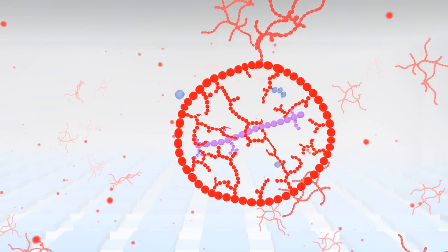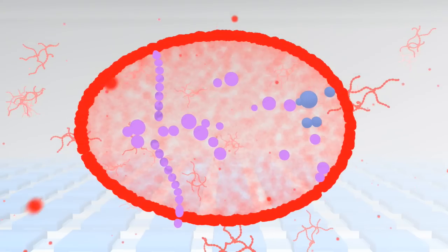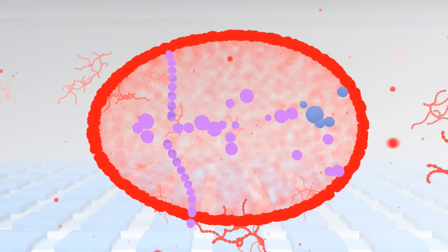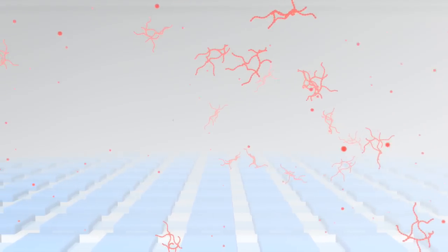A vesicle has formed. And it's got something inside it. Let's go on a few billion generations and we have something a little more interesting going on in the vesicles.